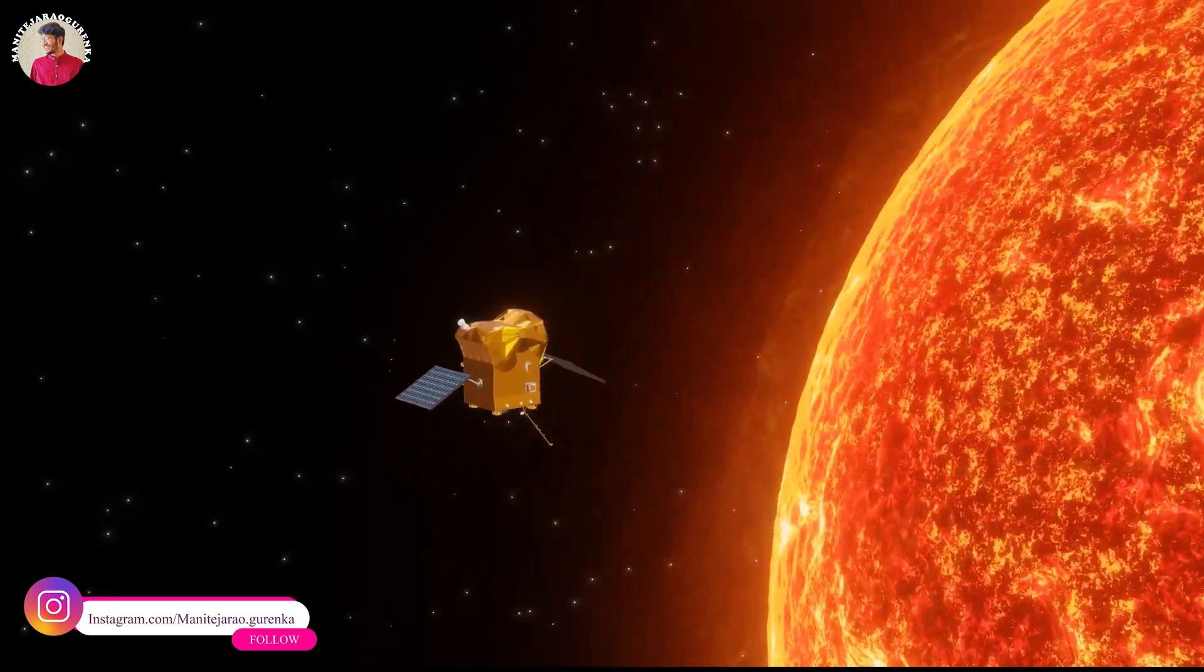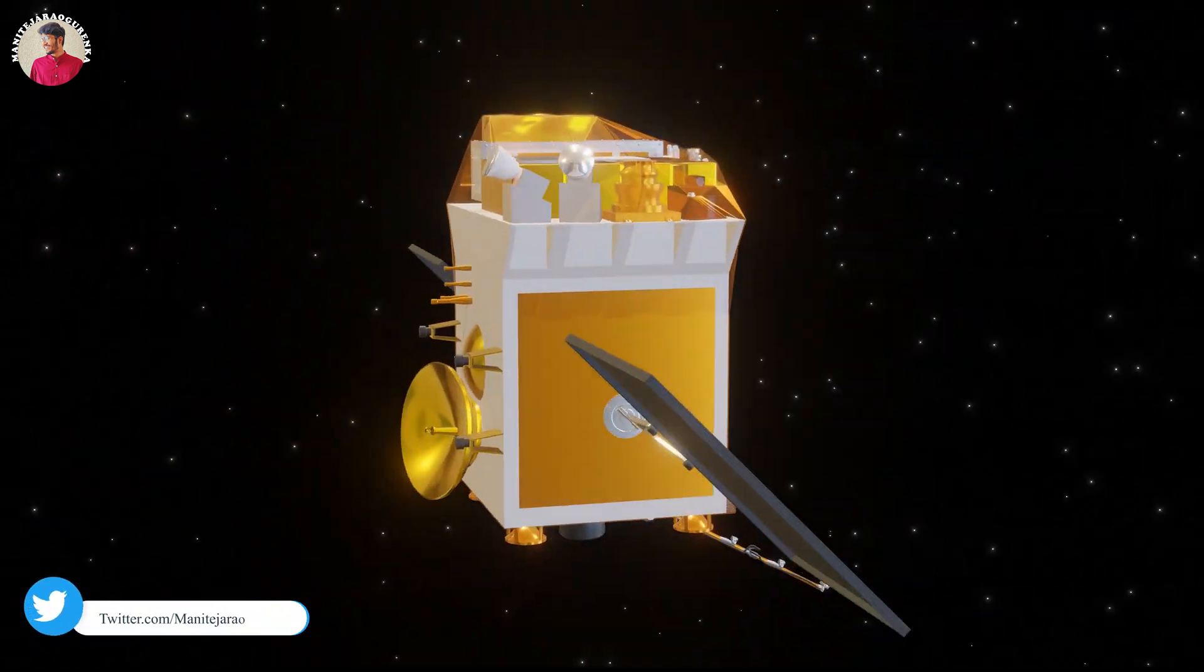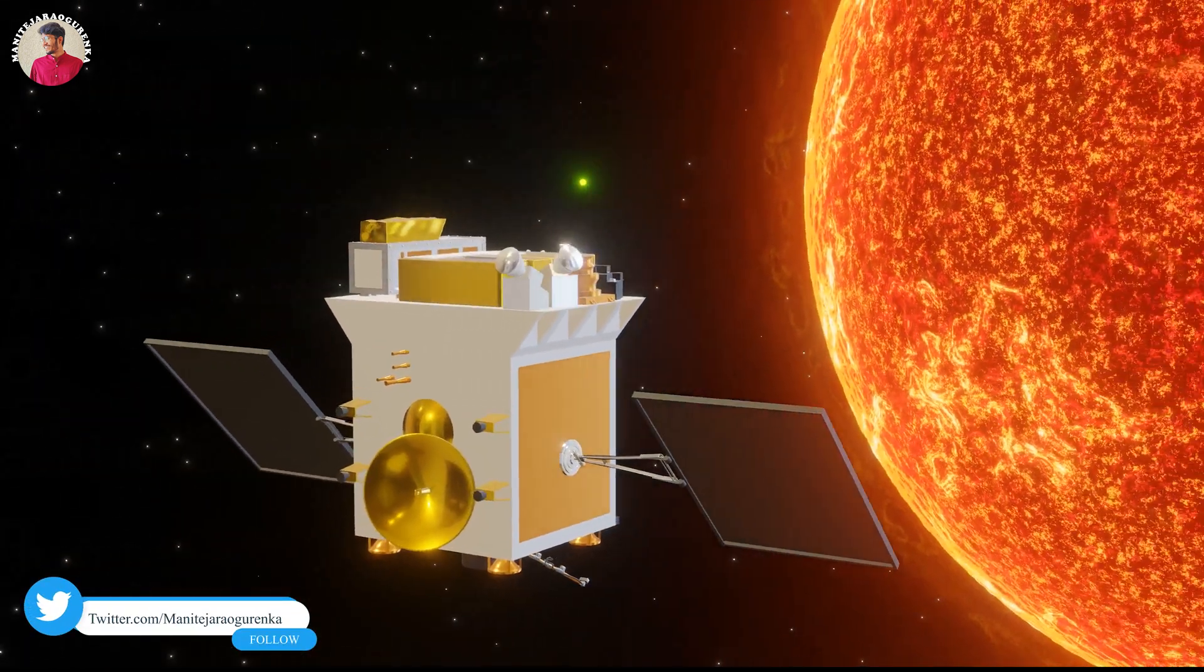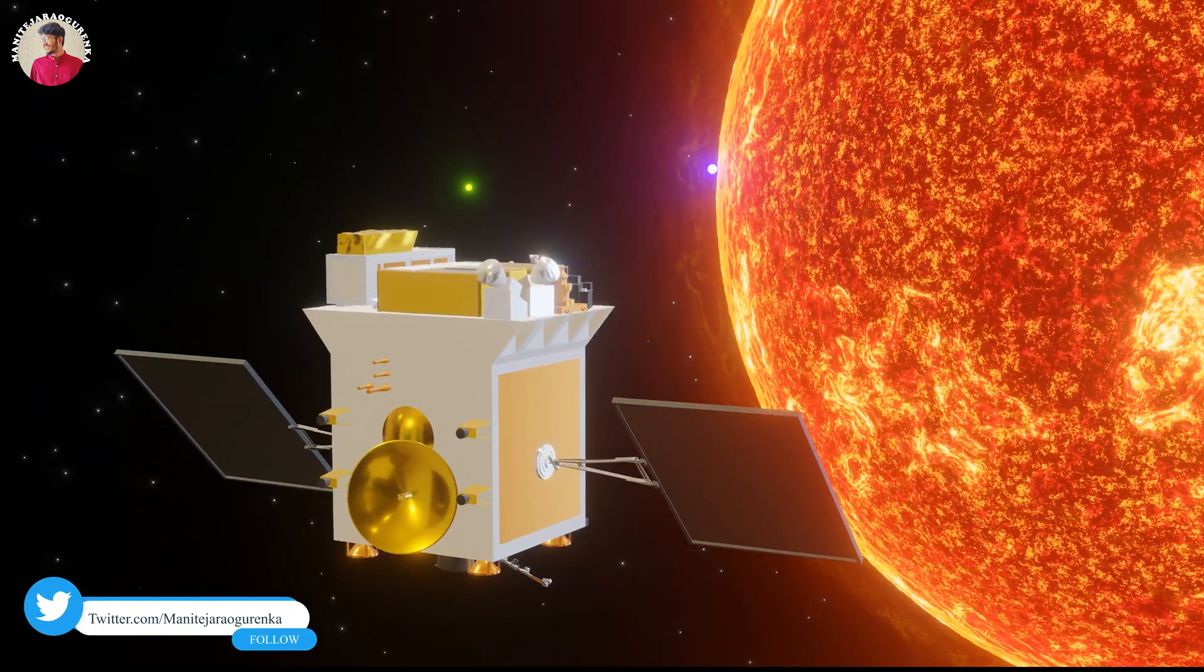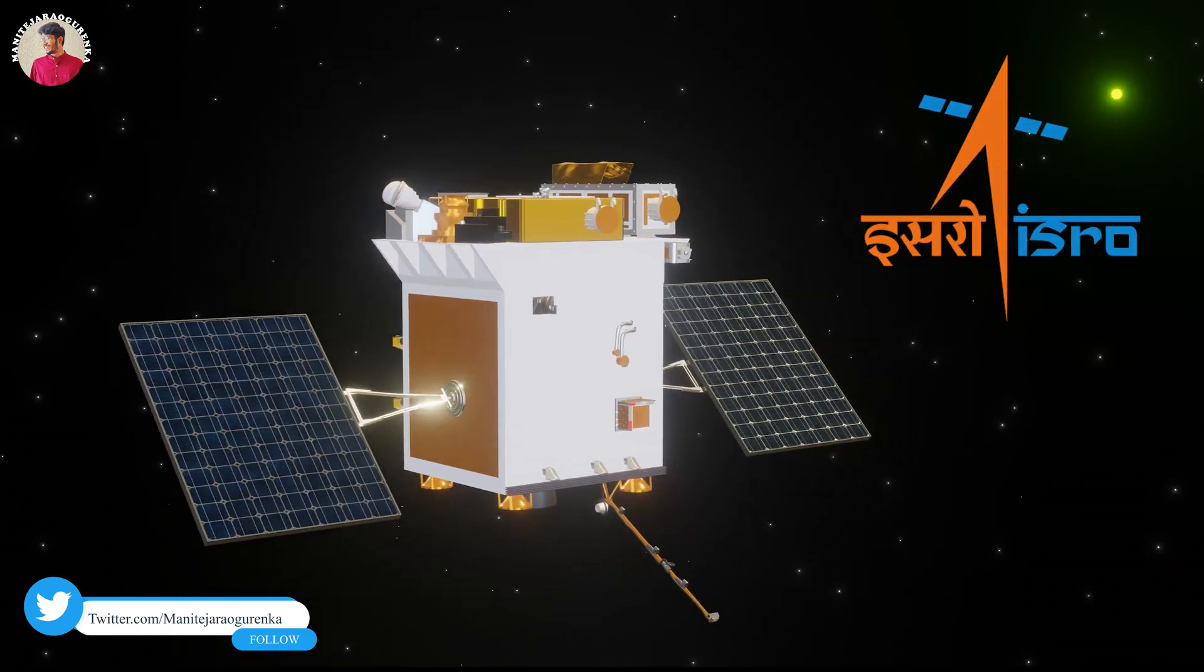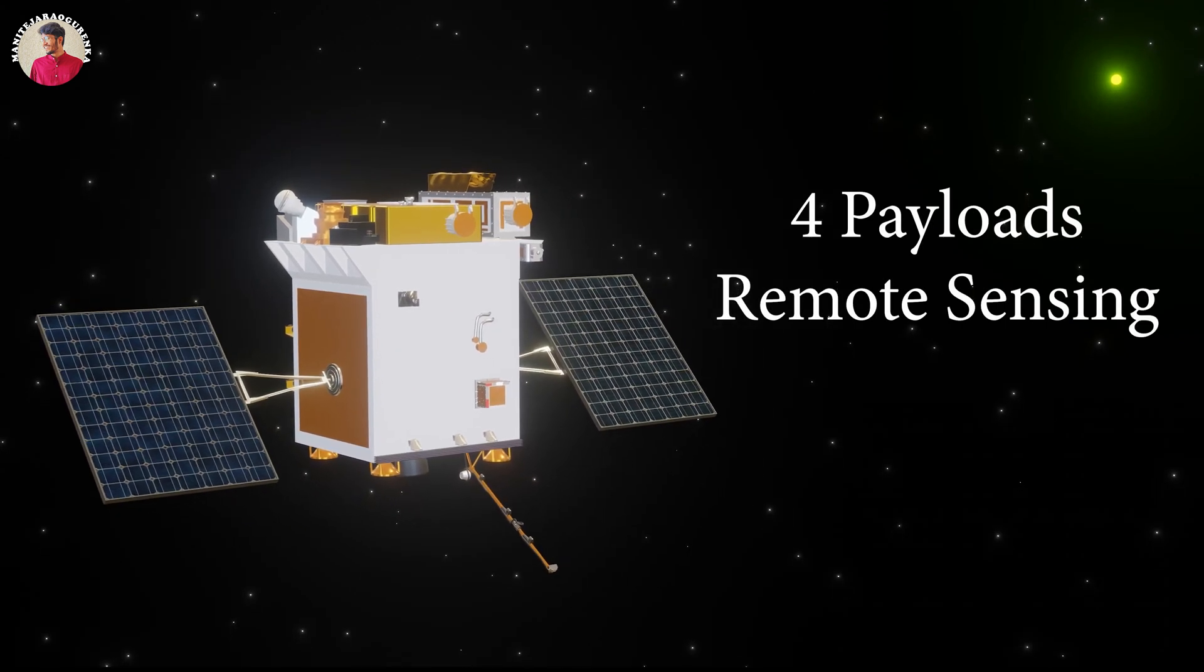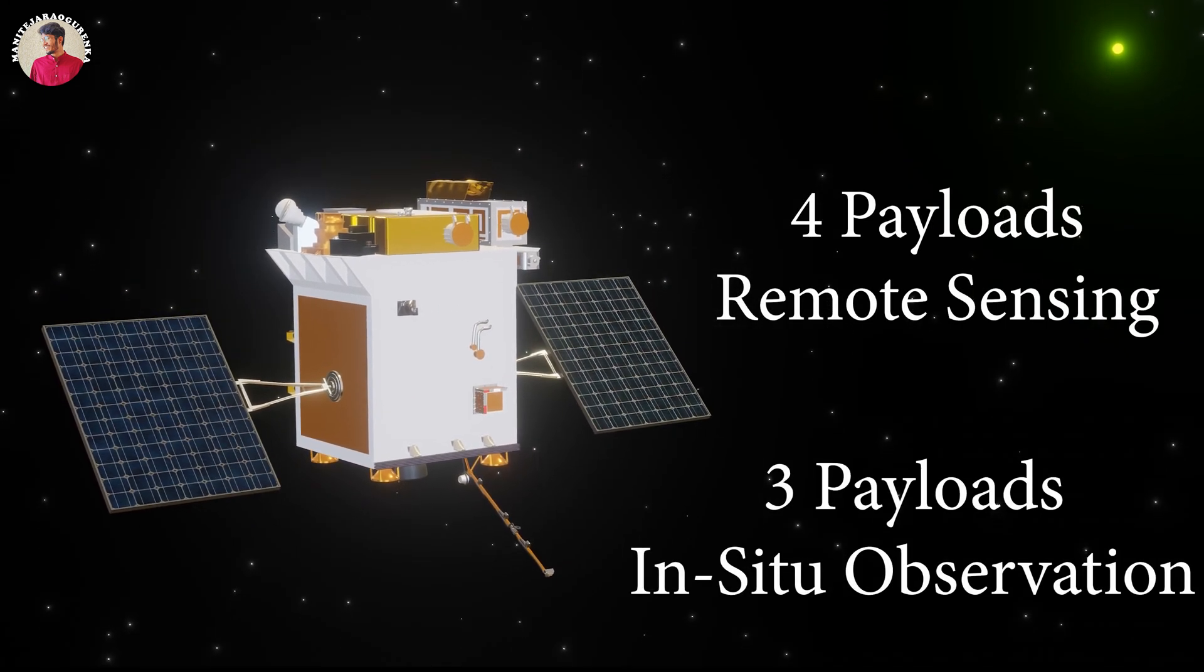Let's see how Aditya L1 will work. Aditya L1 carries seven scientific payloads for the systematic study of the Sun. All payloads are indigenously developed in collaboration with various ISRO centers. Four out of seven payloads will carry out remote sensing of the Sun, and three will carry out in-situ observation.